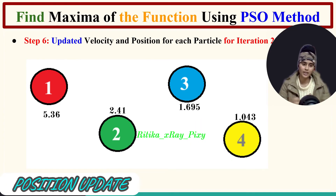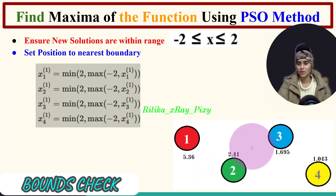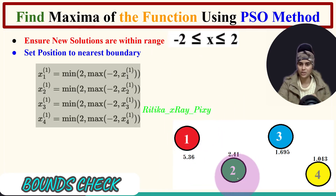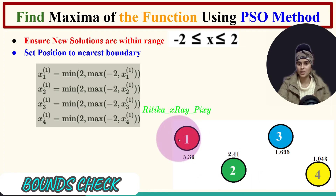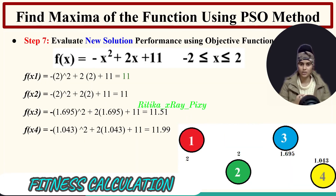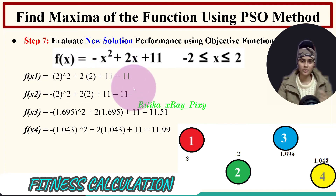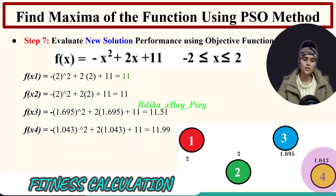Now we ensure the new solutions are within range [-2, 2]. Particles 1 and 2 exceed the boundary, so their positions are set to the nearest boundary value: 2. Particles 3 and 4 are within range. Using the objective function to evaluate: particles 1 and 2 at position 2 get the same fitness value. Particle 3 at position 1.695 gets new fitness = 11.51. Particle 4 at position 1.043 gets new fitness = 11.99.